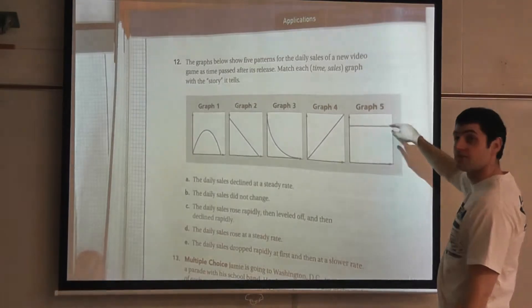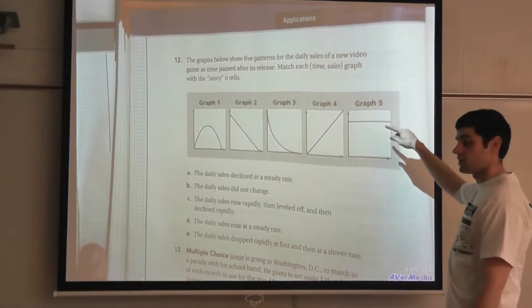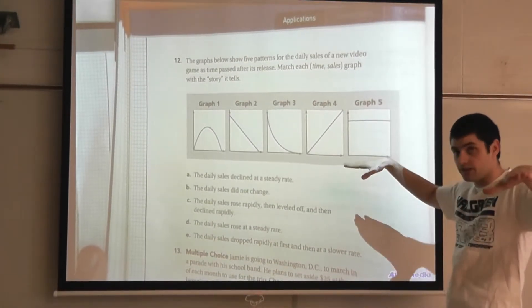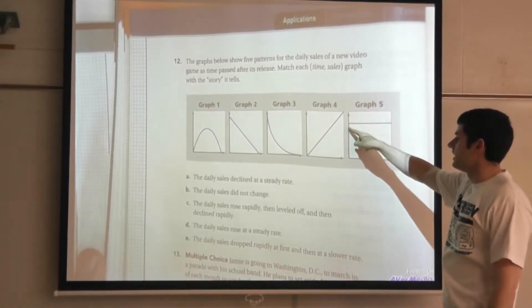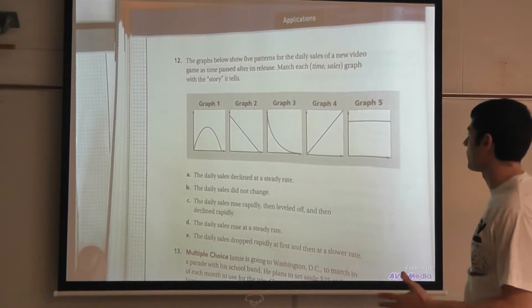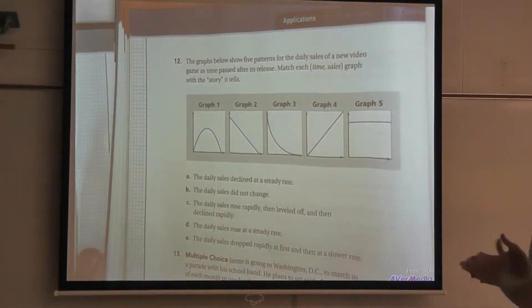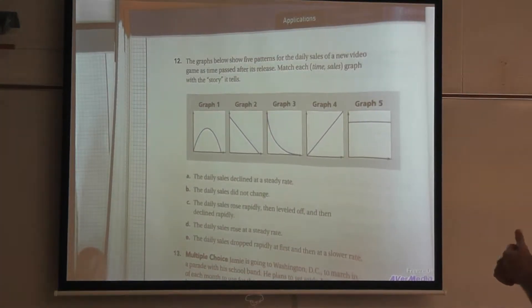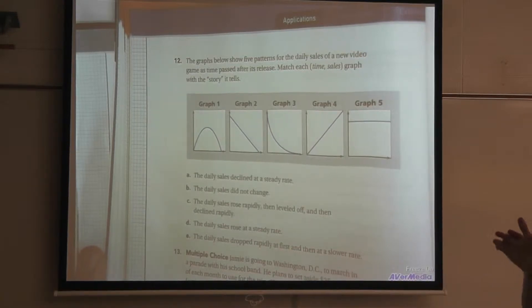It stays exactly the same. It's very consistent. I talked about in the last video like the break even point, how it's like at zero you're even. Same thing here. The daily sales did not change so it stays right in the middle. It's the same. So that was graph 5 with B. Then let's take a look at C.